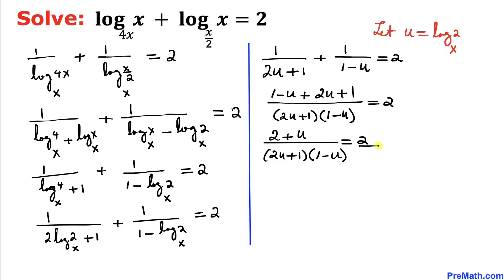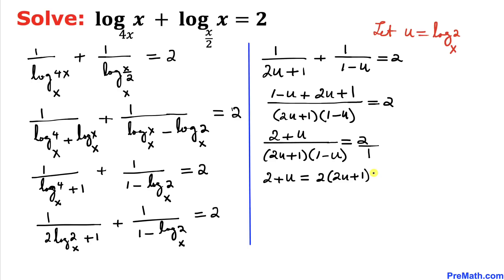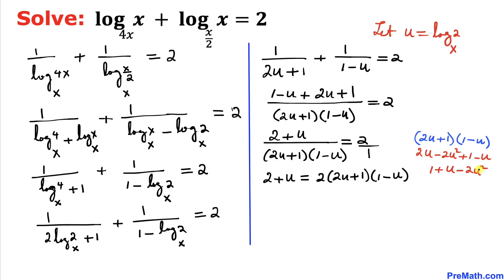Writing 2 as 2/1 and cross-multiplying, we get 2 plus u equals 2 times (2u plus 1)(1 minus u). Using the FOIL method to expand (2u+1)(1−u), we get 1 plus u minus 2u². So the right-hand side becomes 2 times (1 plus u minus 2u²).